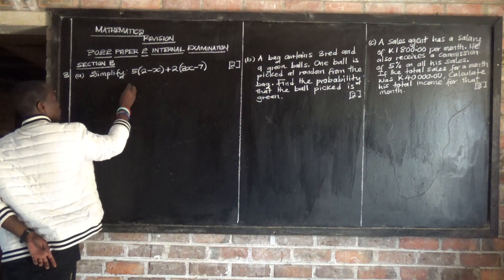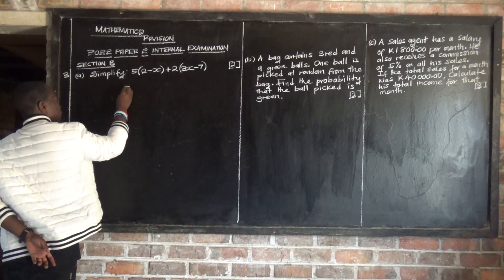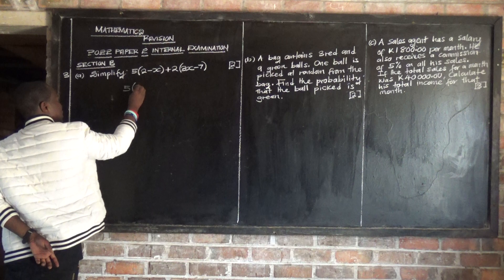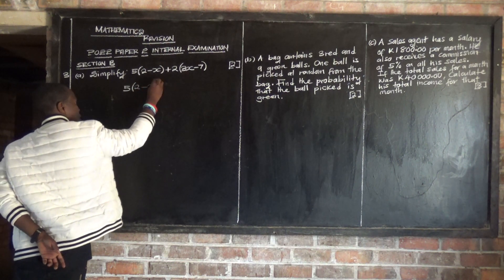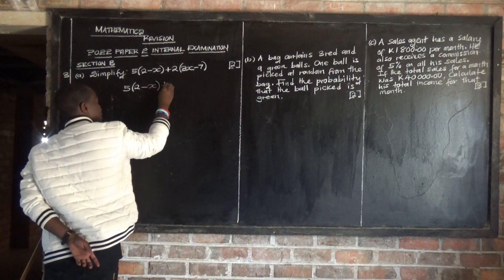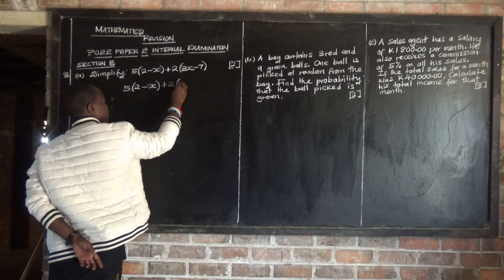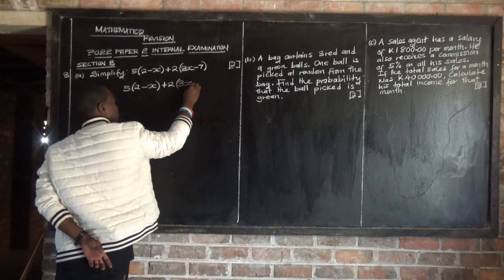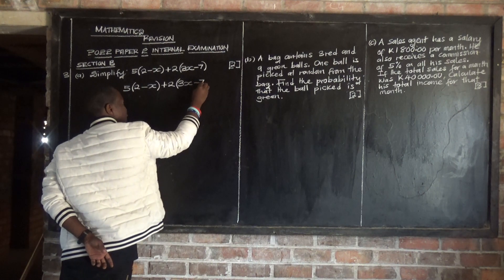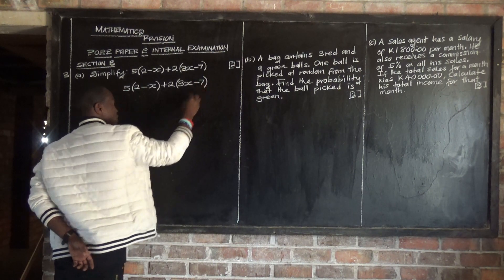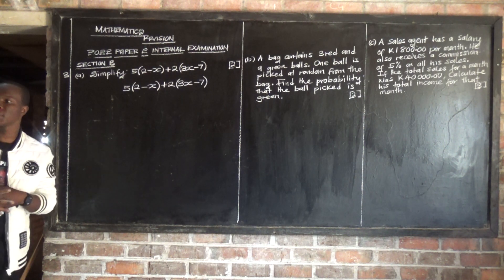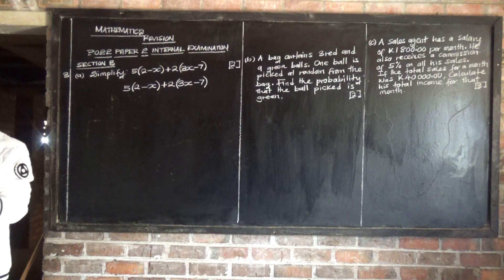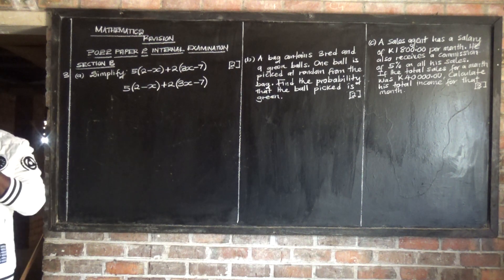Simplify: 5 open brackets 2 minus x close brackets, plus 2 open brackets 3x minus 7 close brackets. We have that expression and we are told to simplify. To simplify means to reduce or to make an expression simpler — to reduce the number of terms.